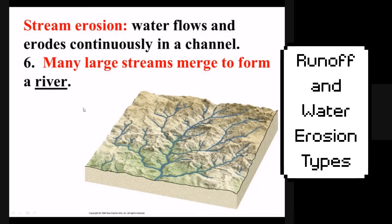Stream erosion can also look something like a dendritic pattern if it occurs in the mountains. Each stream will feed into larger and larger streams until it forms a river. You can have hundreds, if not thousands, of different smaller streams that form one single river, depending on how big that river is.